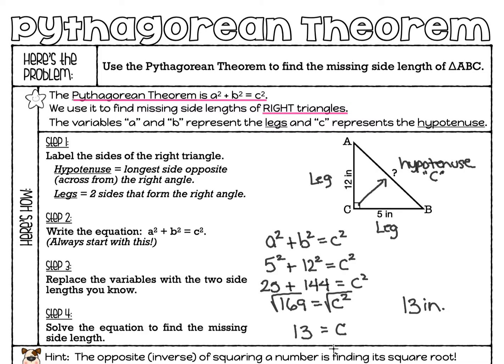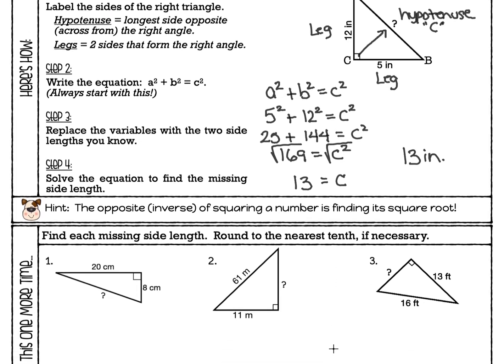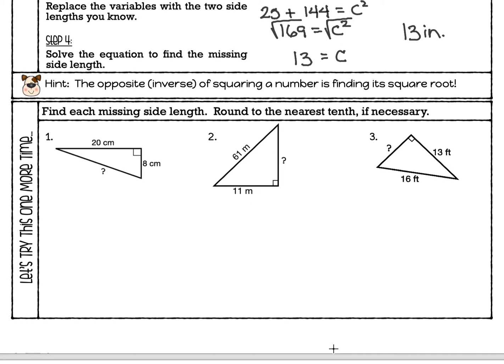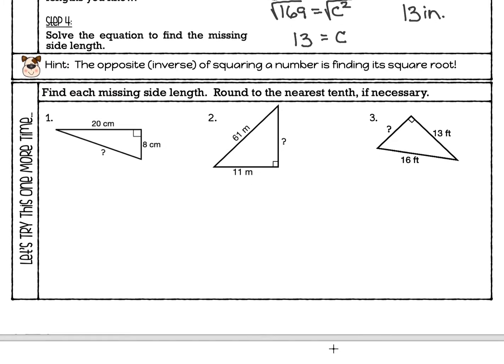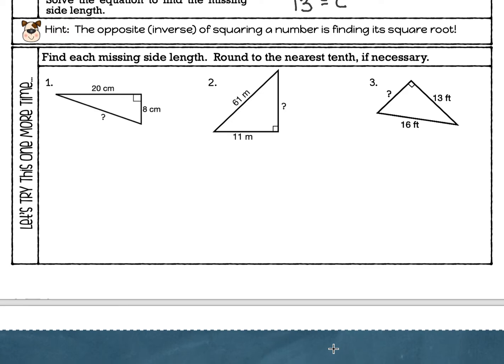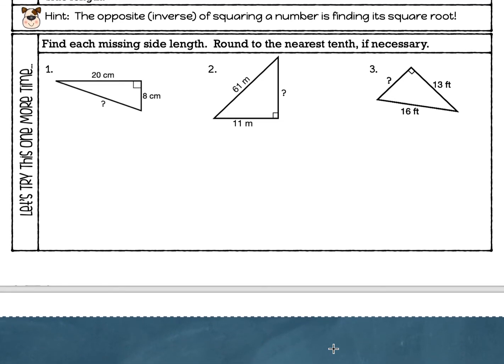Let's move on to the bottom portion of our page. If you're feeling good about this and want to try one on your own, go ahead and stop the video and try number one. If you'd like to watch one more example first, that's fine too. We're going to start with our Pythagorean theorem: A squared plus B squared equals C squared.